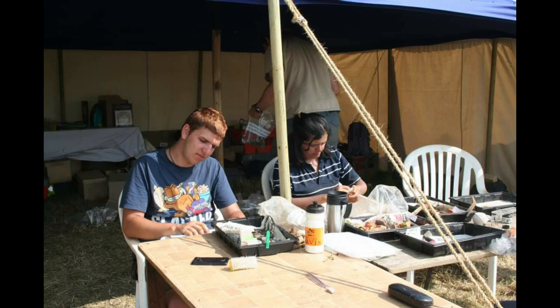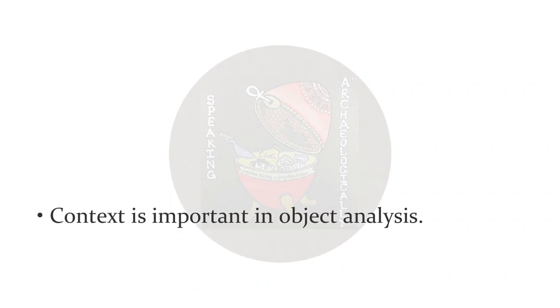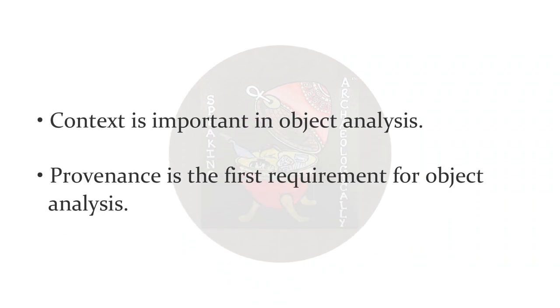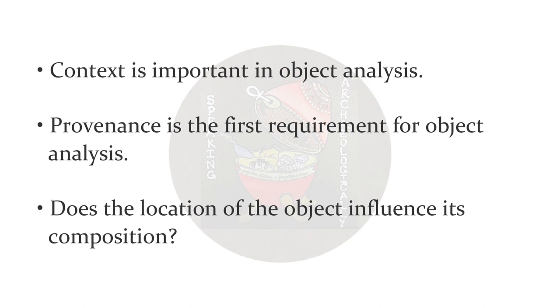The third type of object analysis is post-excavation. So if you're studying anything that is in a museum and you are analyzing it, that's a post-excavation object analysis. In all the cases, object analysis is futile without context. One thing which is imperative to keep in mind is context. The first requirement for analysis, therefore, is provenance — the place of origin or the earliest known history of something.